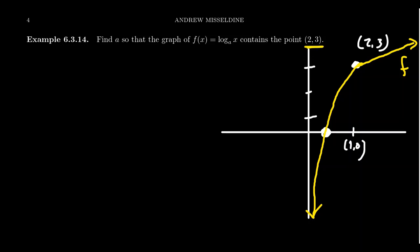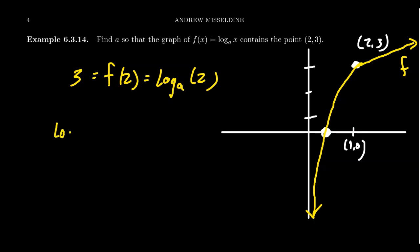We can use this point to figure out what the base of the function is. Because if we look at f of 2, because of the point, we know that f of 2 is going to equal 3. But because of the function formula, we know f of 2 is going to equal log base a of 2. And so we have the equation: log base a of 2 is equal to 3. Now we want to solve for a. We can switch it from logarithmic form to exponential form.